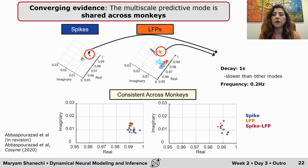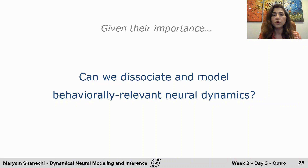This shared mode had a time decay of about a second and an oscillation frequency of about 0.2 Hz. So far, what I've shown you is that neural dynamics are actually important in explaining behavior. The next question is, given their importance, can we develop novel methods that can dissociate and model those neural dynamics that are behaviorally relevant?